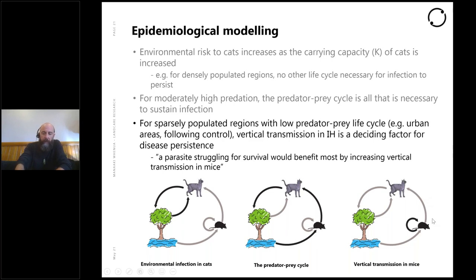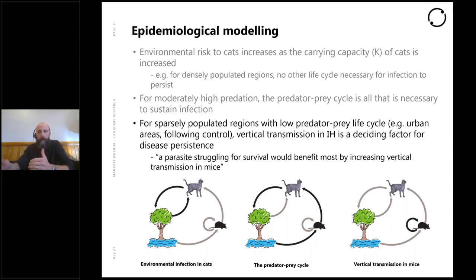In certain scenarios, vertical transmission in rodents is the most important route of transmission for disease persistence, especially long-term. A quote from that paper says: 'a parasite struggling for survival would benefit most by increasing vertical transmission in mice.' This can be very important when you're reducing cats — so there are very few cats and the parasite isn't completing its normal life cycle. We'd like to investigate that.